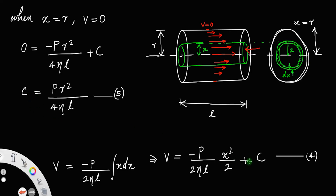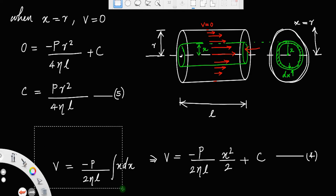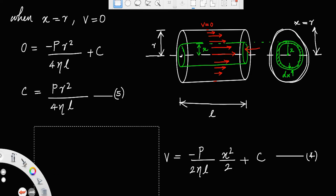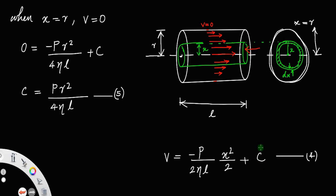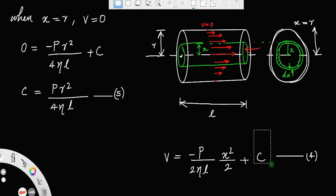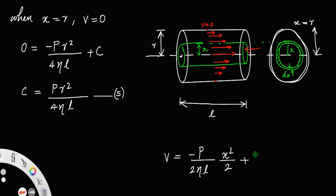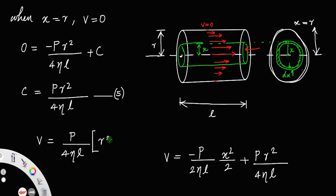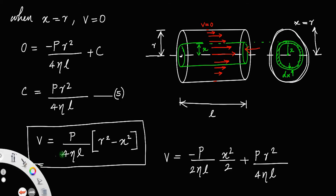Substituting the value of C back into equation 4: v = −(Px²)/(4ηL) + (PR²)/(4ηL). Rearranging, this gives v = (P/4ηL)·(R² − x²). This is the expression for velocity at a perpendicular distance x from the axis of the cylinder due to the flow of the fluid.